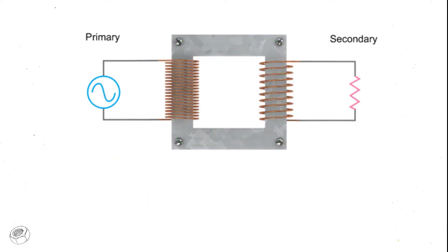If there are fewer coil turns on the secondary than on the primary, this is called a step-down transformer. The resulting voltage in the secondary circuit will be less than the primary.